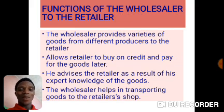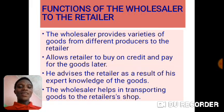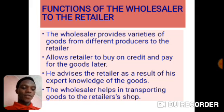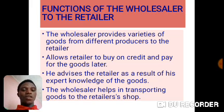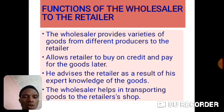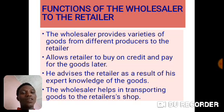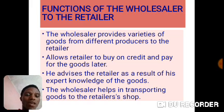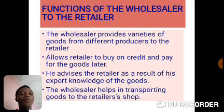Now let's look at the functions of the wholesaler to the retailer. Number one: provision of varieties of goods. The wholesaler buys goods from different producers in large quantities and stocks them in a safe place. The retailers then go to the wholesaler and pick goods from different companies in one place. That means the wholesaler is able to provide different varieties of products to the retailer, minimizing the cost of the retailer moving from one company to another to buy goods.